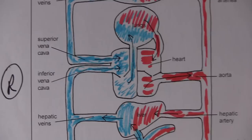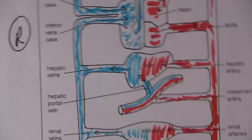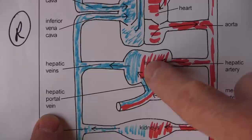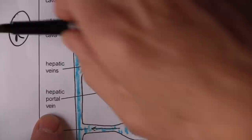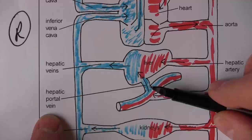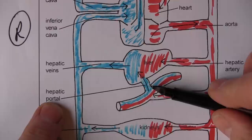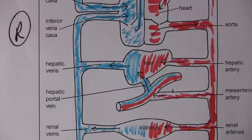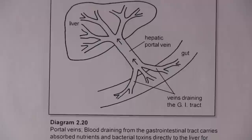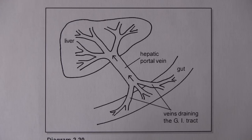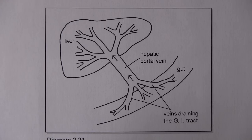Another particularly interesting feature mentioned in the first video was the hepatic portal vein. It's 'hepatic' because it relates to the liver, and it's a 'vein' because it carries blood back towards the heart. It's called 'portal' because it's a vein that ends in capillaries — most veins drain into bigger veins, but this one ends in capillaries.